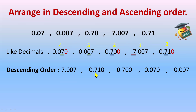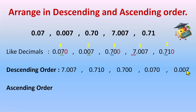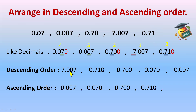You can verify: 7 is the whole number so it's greatest, and the others have zeros. In second place, the tenth place is 7 and hundredth is 1 versus 0, confirming 0.710 is greater. For ascending order, we simply reverse the descending order: 0.007, 0.070, 0.700, 0.710, and 7.007.